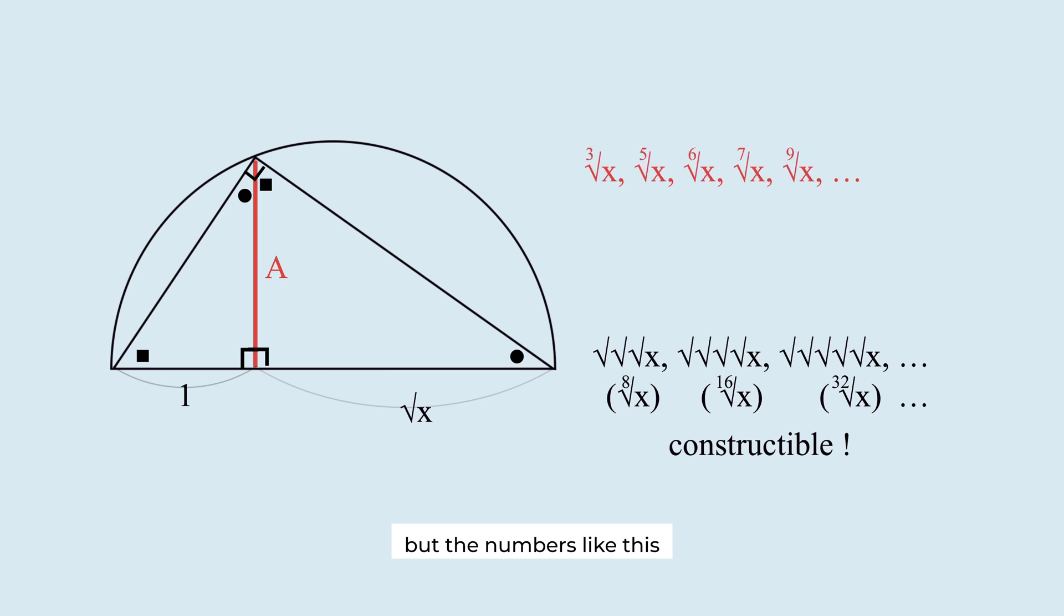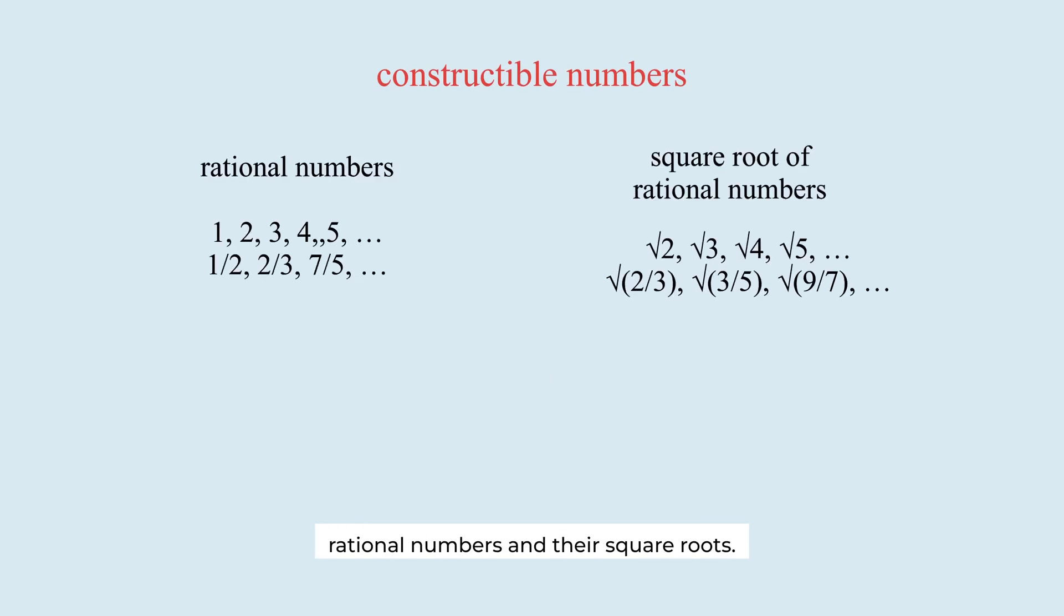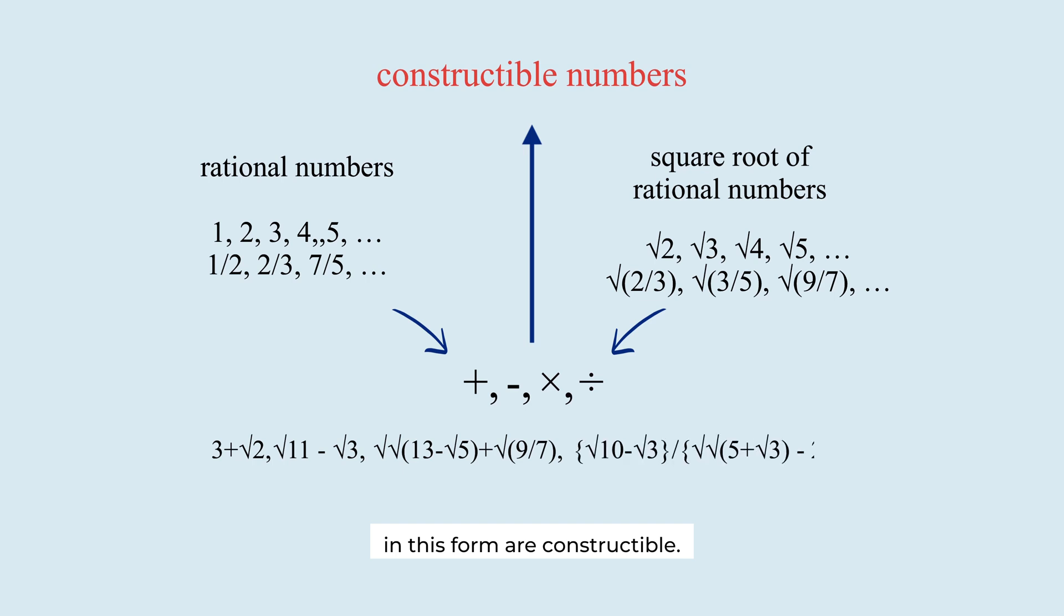But the numbers like these still can't be constructed this way. In summary, constructible numbers include rational numbers and their square roots. Addition, subtraction, multiplication, and division of these numbers are also constructible. So, even complicated-looking numbers in this form are constructible.